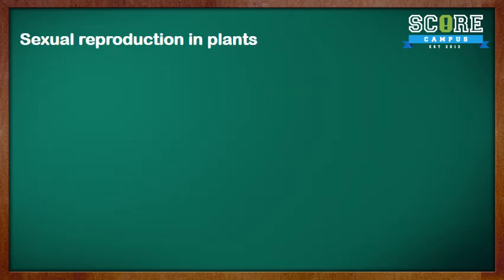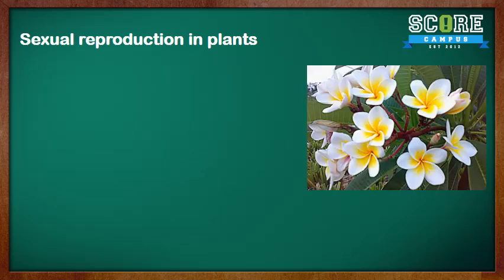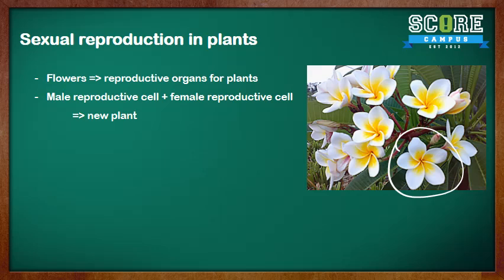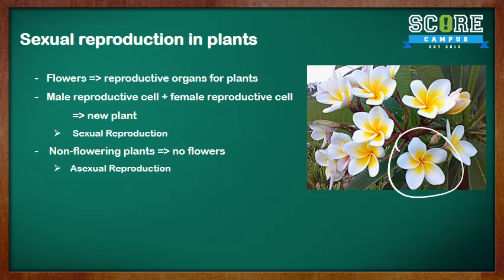Let's look at sexual reproduction in plants. A flower is the reproductive organ of flowering plants. When a male reproductive cell fuses with a female reproductive cell, a new plant is formed — this is what we call sexual reproduction. Non-flowering plants do not have flowers, and that is why they go through asexual reproduction, which we will look at later in this video.